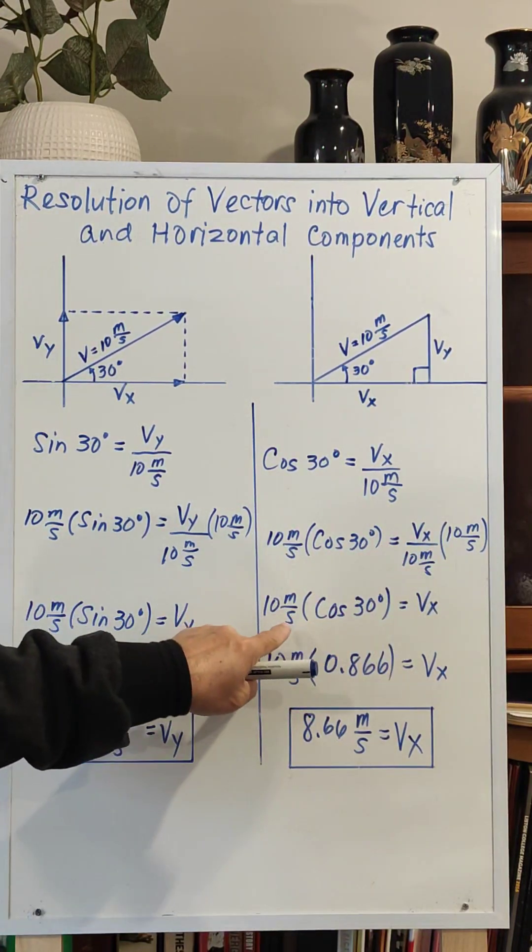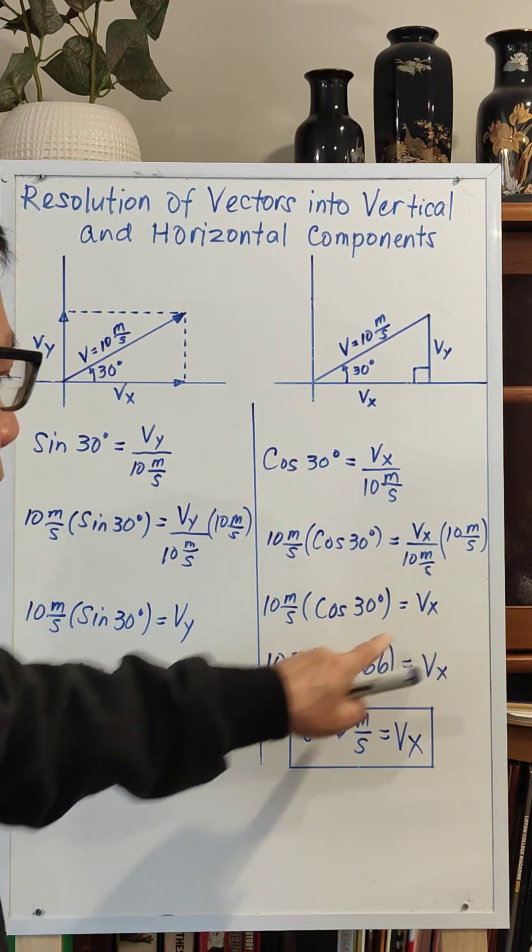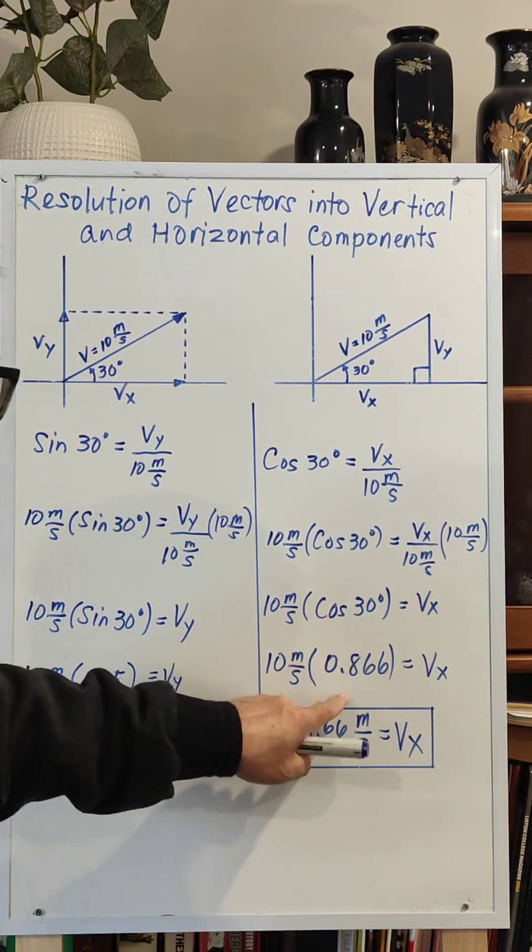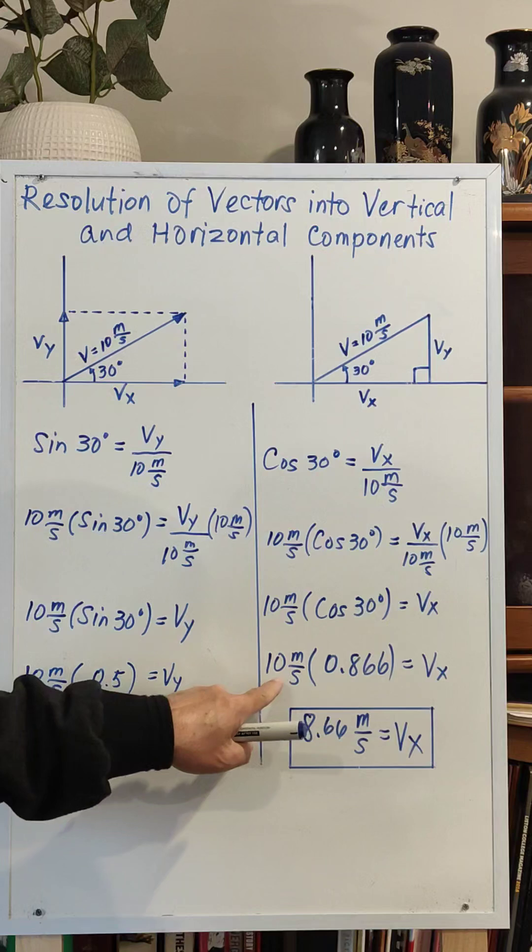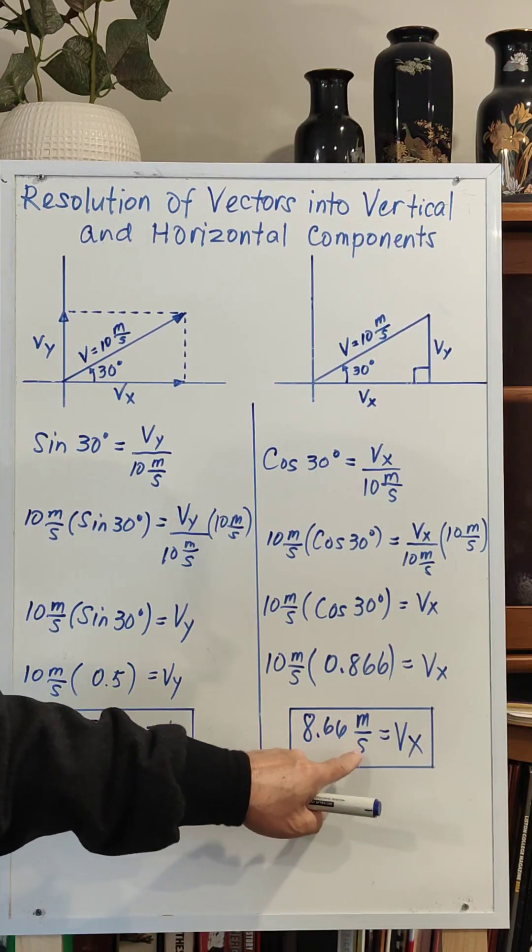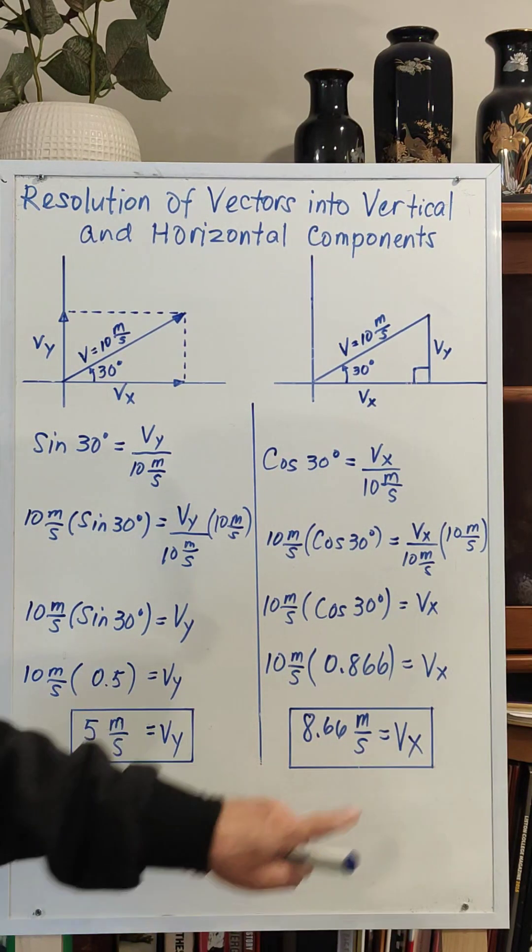Cosine 30 is 0.866 times 10, which is 8.66 meters per second. This is your horizontal component.